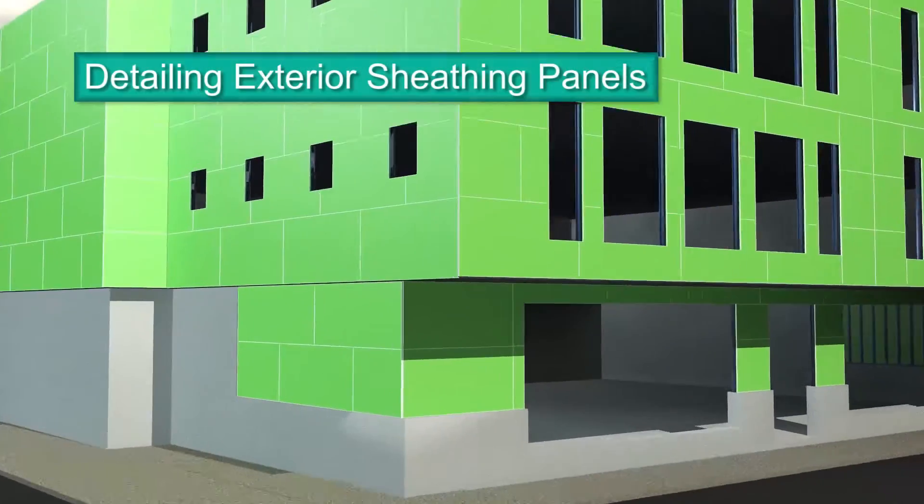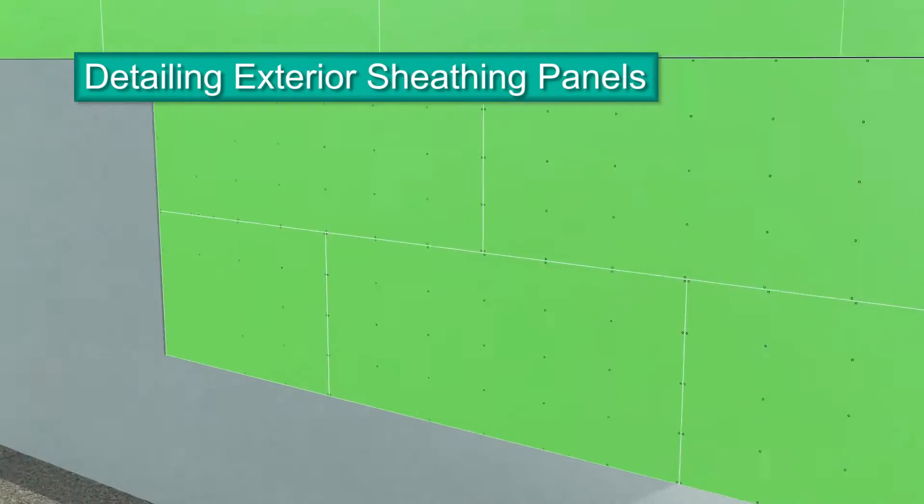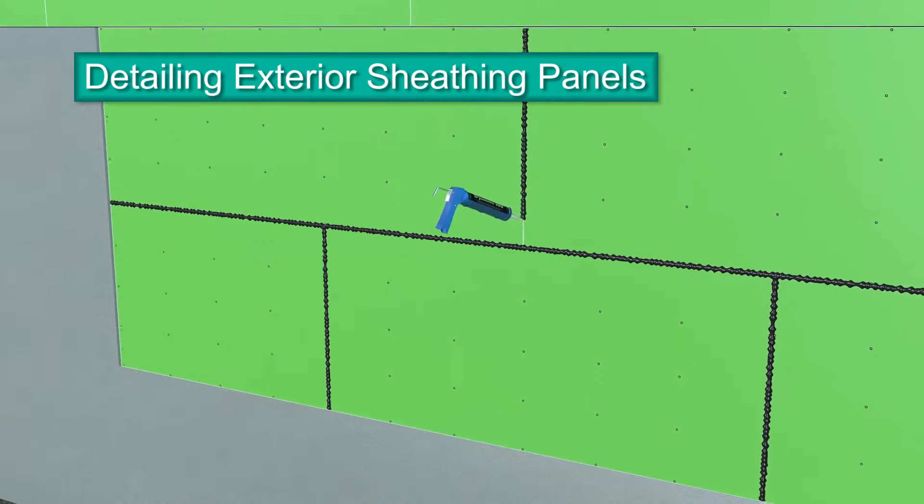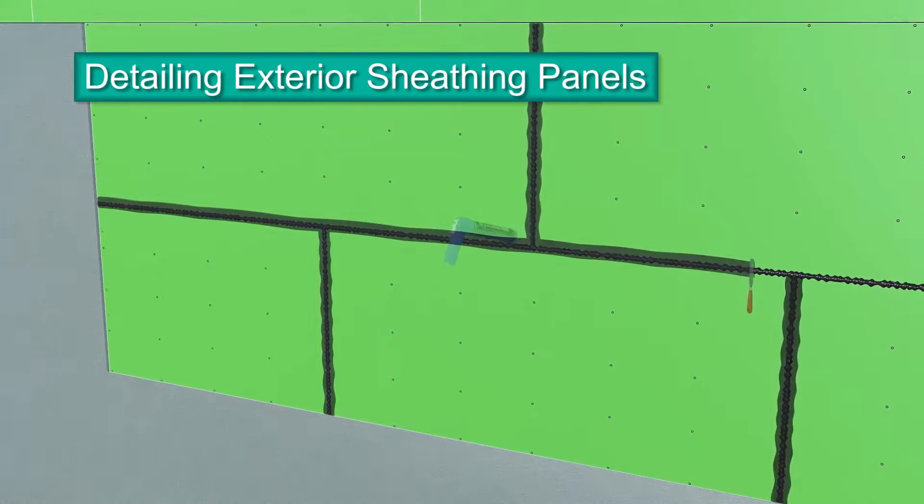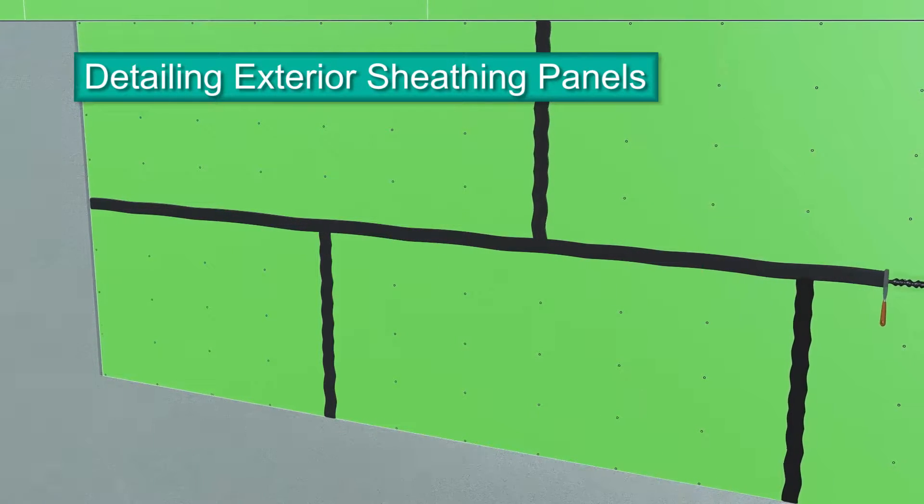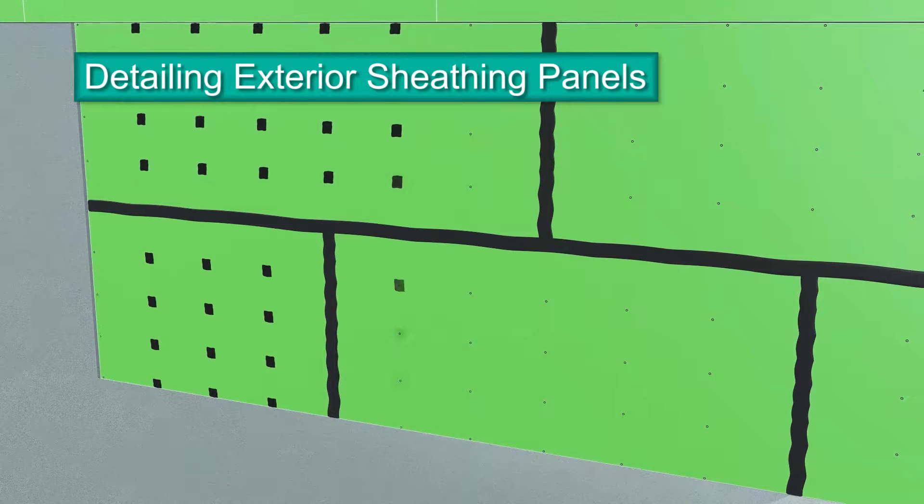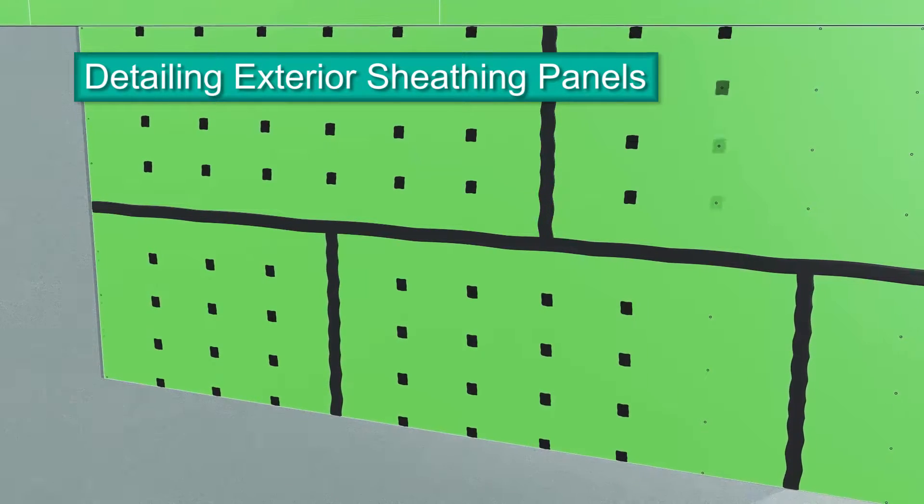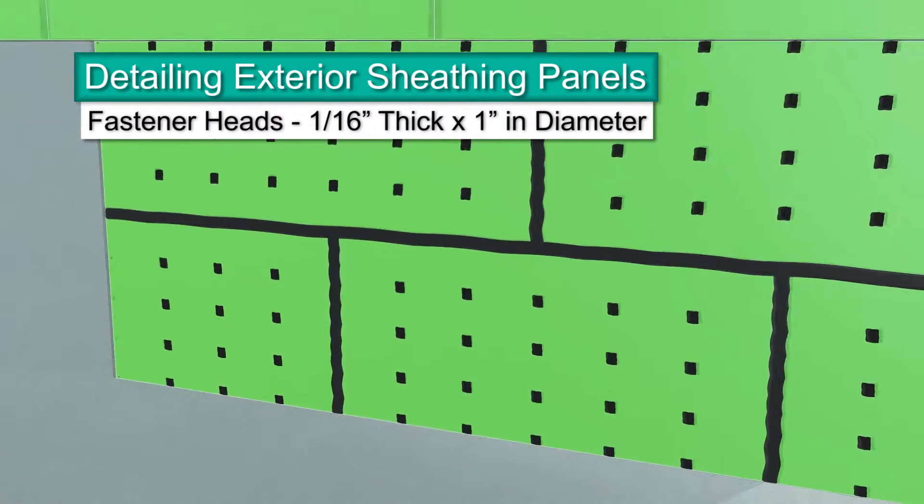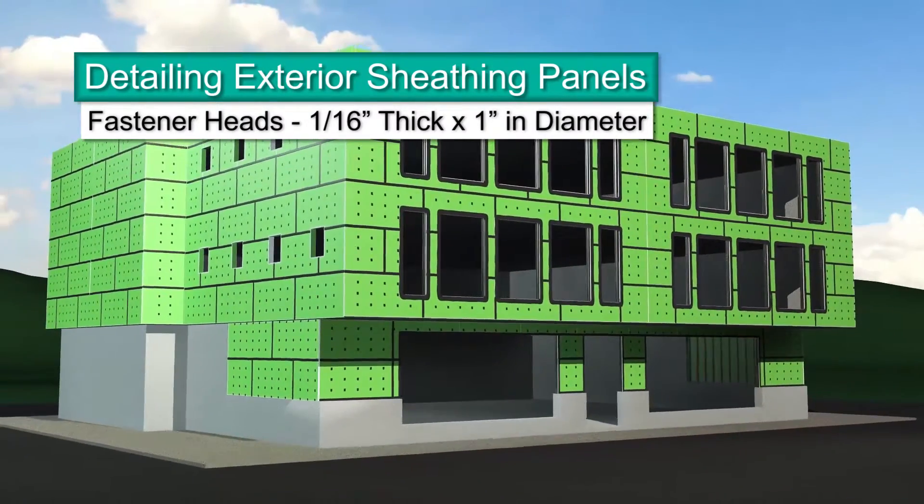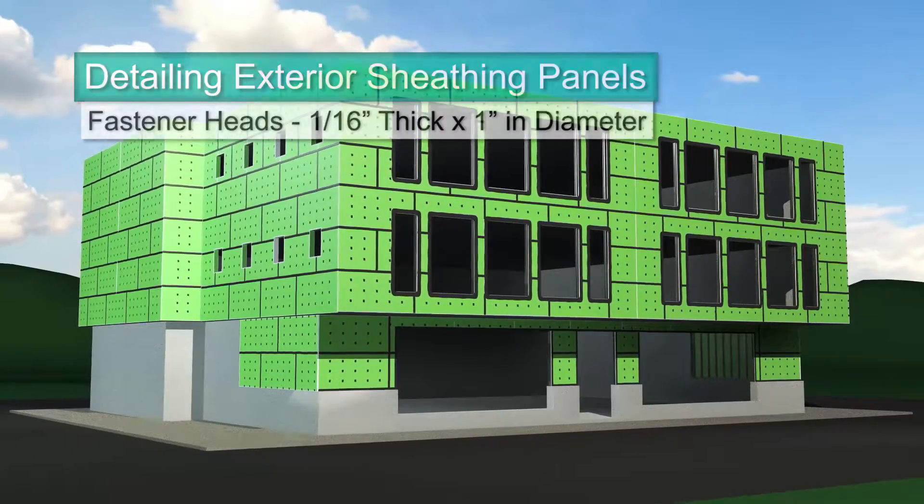Exterior sheathing panels can be detailed using Dimonic 100 high-performance polyurethane sealant. Dimonic 100 is the approved sealant for detailing all board joints and fastener heads. Apply sealant to board joints. When intersecting horizontal and vertical joints, make sure to apply the sealant so no holes or gaps appear. Spot all fastener heads with sealant 1/16th of an inch thick and 1 inch in diameter, just enough to completely cover the fastener heads.